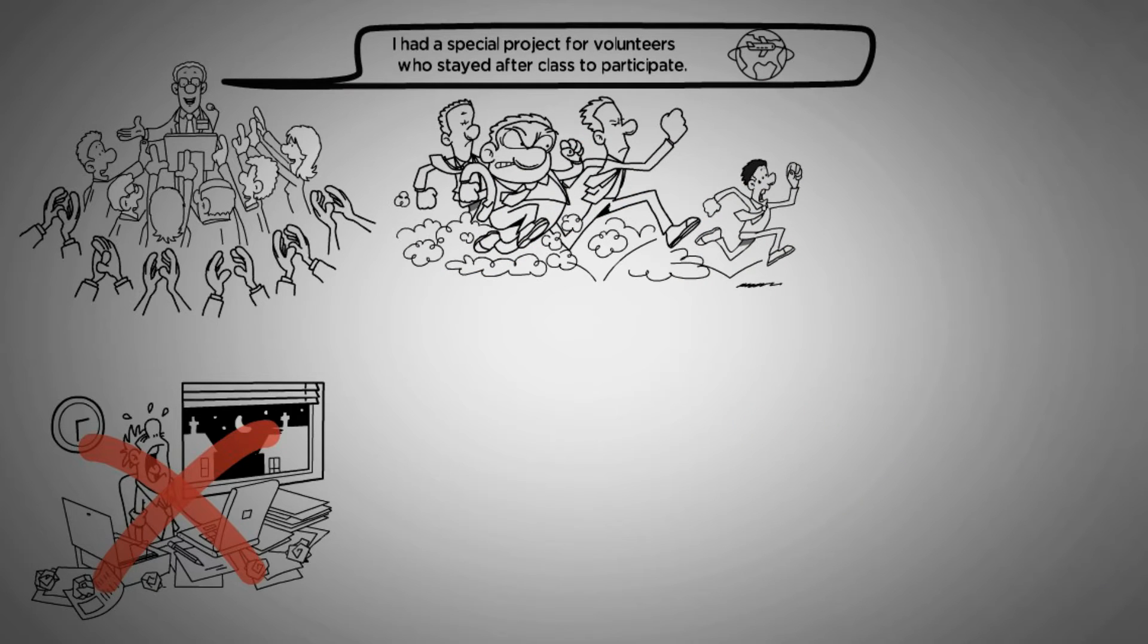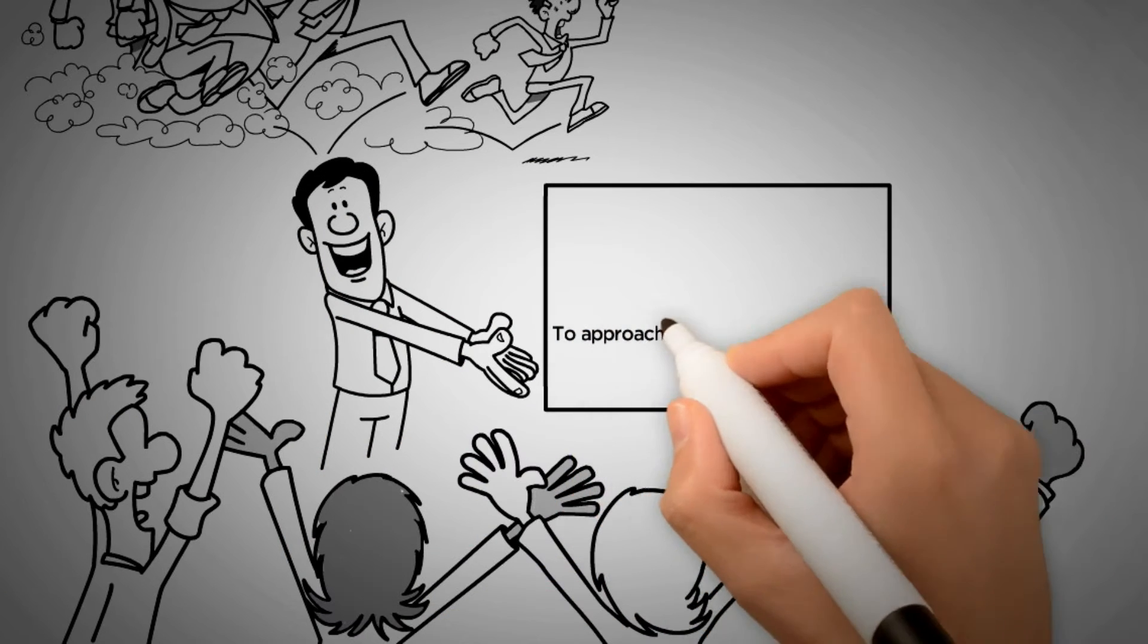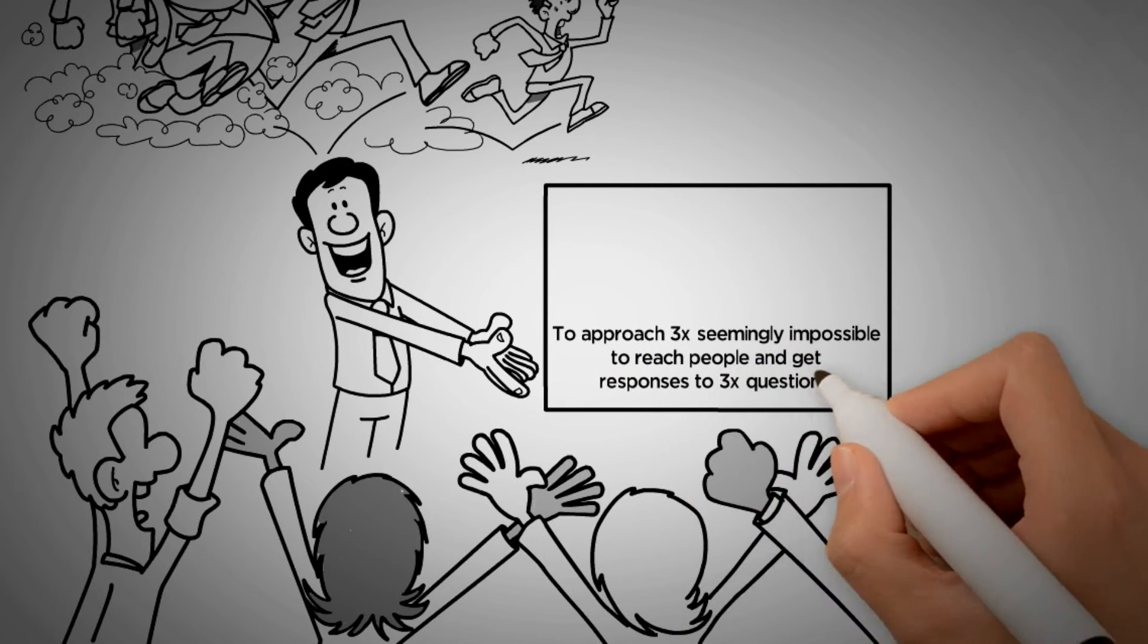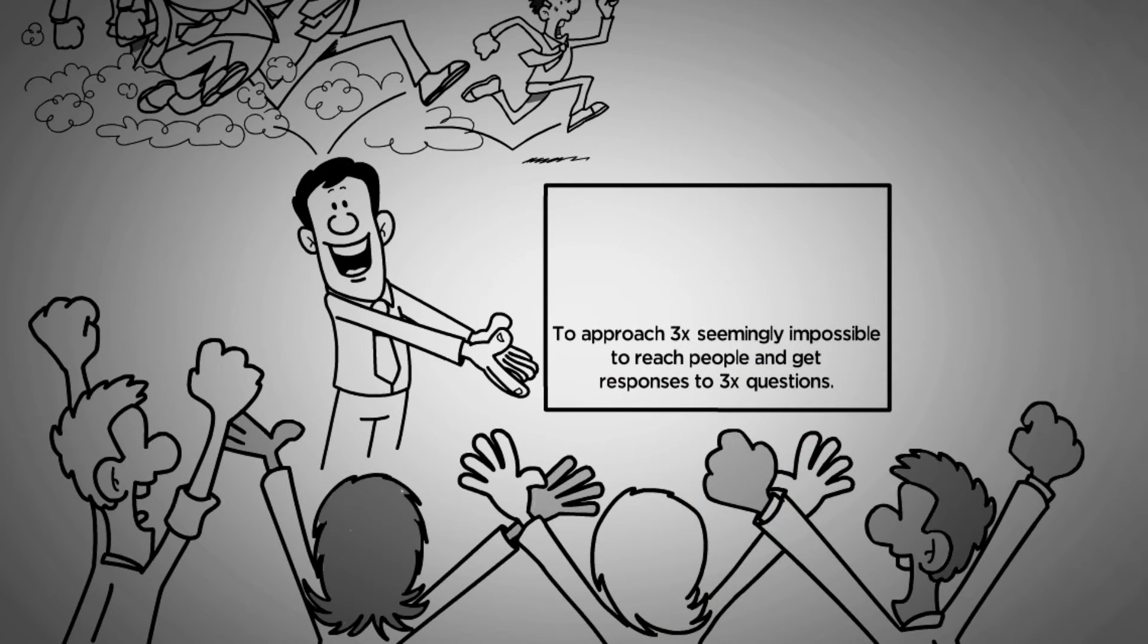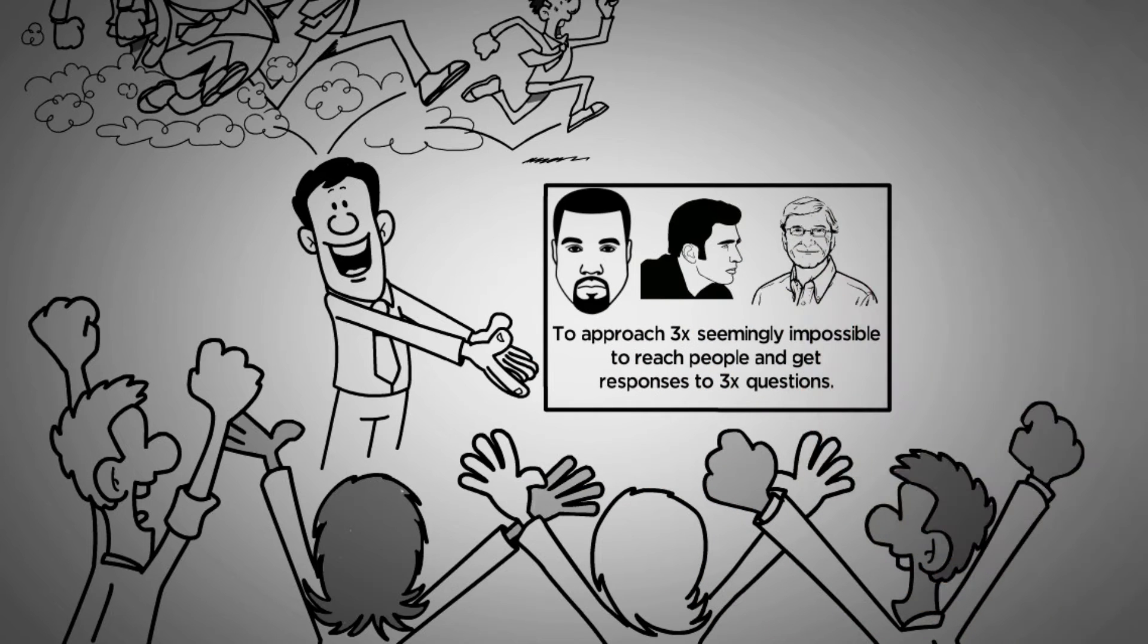Whoever succeeded would only win if they completed the task more stylishly, in Tim's judgment, than the other winners. His task? To approach three seemingly impossible-to-reach people and get responses to three questions - top celebrities like Kanye West, Chris Evans, Bill Gates, or presidential candidates.